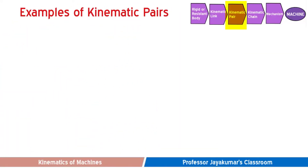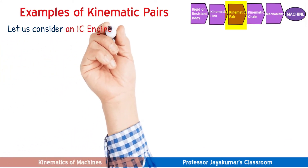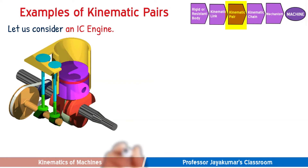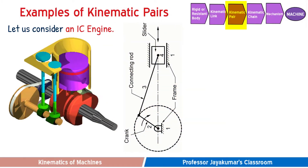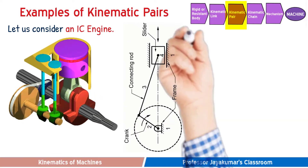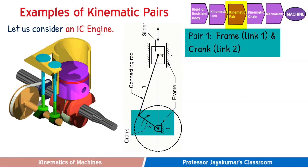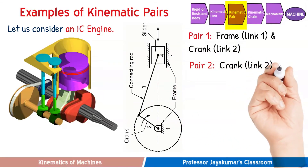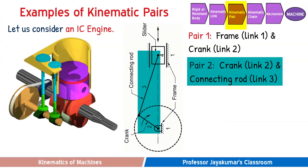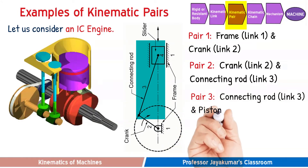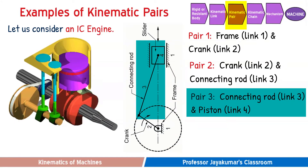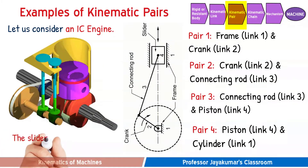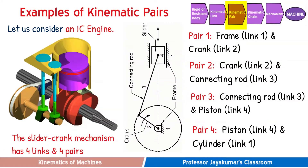Let us see a few examples of kinematic pairs. Consider an IC engine, which is a machine that employs a slider crank mechanism. The slider crank mechanism has four links: the fixed link (also known as the frame), crank, connecting rod, and slider. When the fixed link and crank have relative motion, they form kinematic pair one. Similarly, crank and connecting rod form pair two. Connecting rod and piston form pair three, and piston and the fixed link cylinder form pair four. Thus the slider crank mechanism has four links and four kinematic pairs.